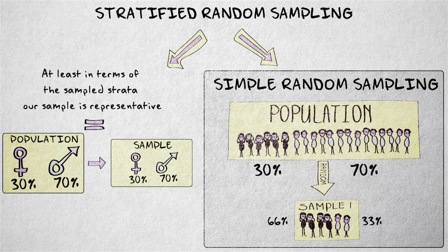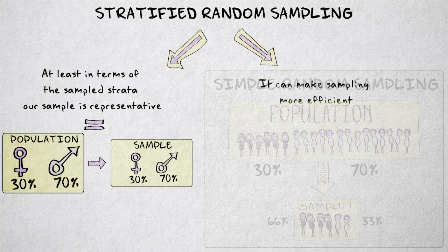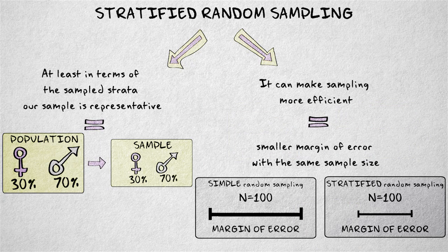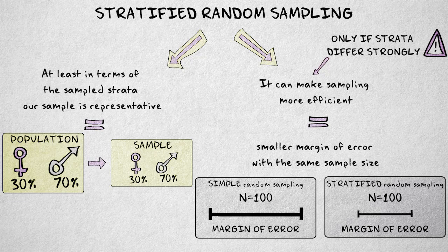Second, stratification is useful because it can make sampling more efficient. This means, all other things being equal, that we achieve a smaller margin of error with the same sample size. Stratifying only increases efficiency if the strata differ strongly from each other, relative to the differences within each stratum.